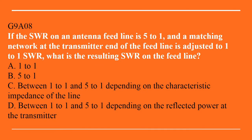G9A08: If the SWR on an antenna feed line is 5 to 1 and a matching network at the transmitter end of the feed line is adjusted to 1 to 1 SWR, what is the resulting SWR on the feed line? A. 1 to 1. B. 5 to 1. C. Between 1 to 1 and 5 to 1 depending on the characteristic impedance of the line. Or D. Between 1 to 1 and 5 to 1 depending on the reflected power at the transmitter. The correct answer is B, 5 to 1.